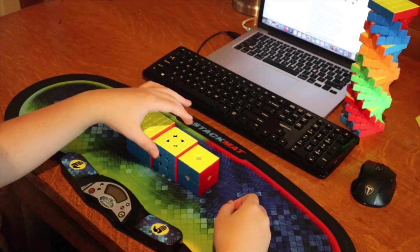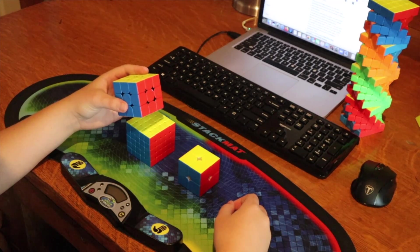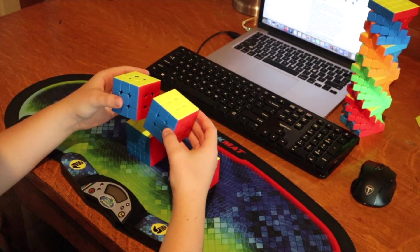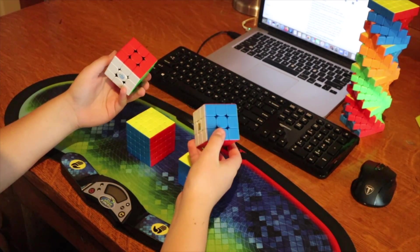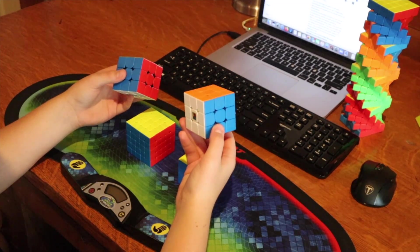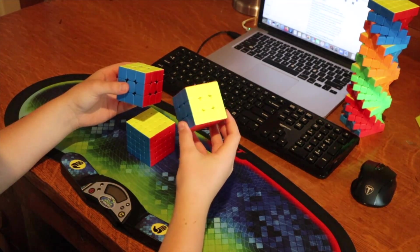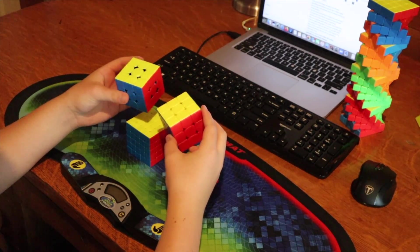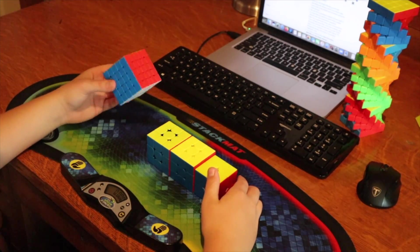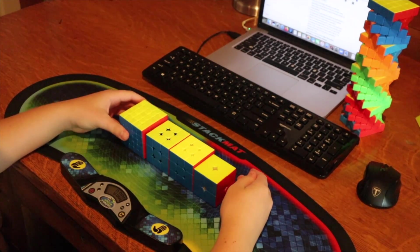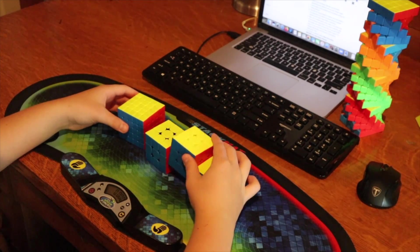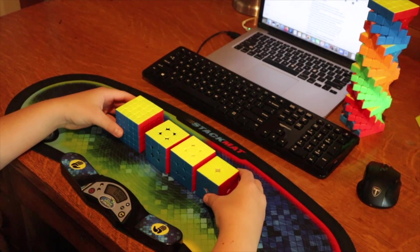I'm debating whether to use the GAN 356XS or the Moyu RS3M 2020. I just got the RS3M in an unboxing video, so if you want to see that there will be a link in the description. I also got the MGC5 in that unboxing, so I'm really excited to use this new 5x5 and maybe this new 3x3 for today's competition.